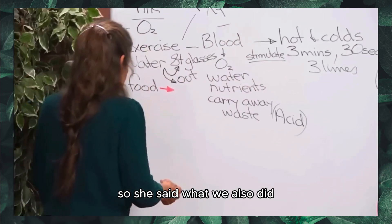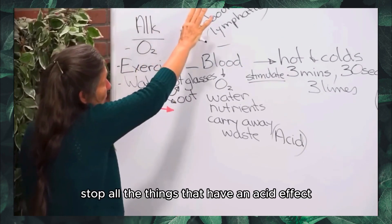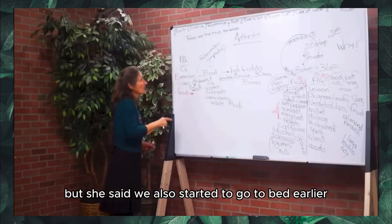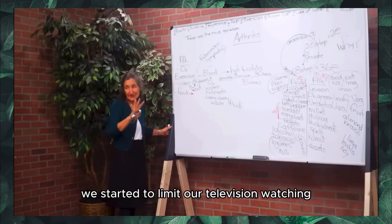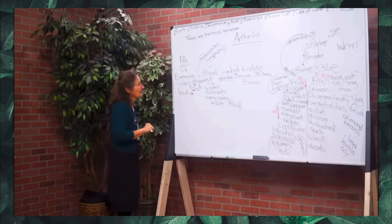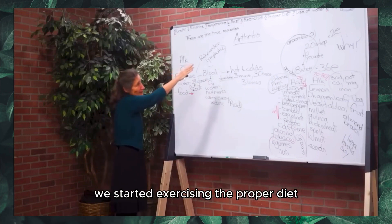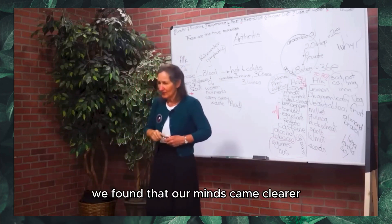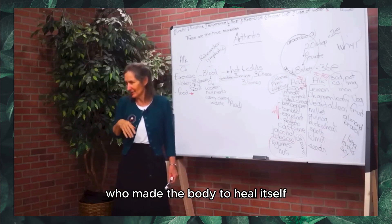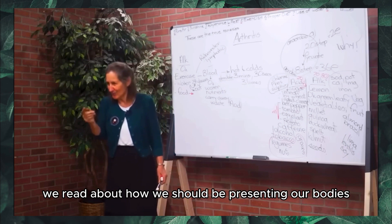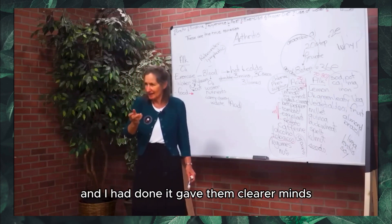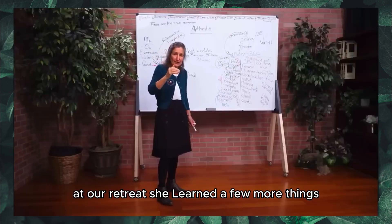She also shared that they stopped all acid-forming things, started going to bed earlier, limited television watching, and eliminated as much technology exposure as possible — which has an acid effect. They started exercising, followed the proper diet, used water therapy, and started reading their Bible. They found their minds became clearer, and they began to learn about the God who made the body to heal itself. The change in lifestyle and diet gave them clearer minds.